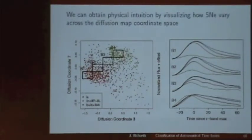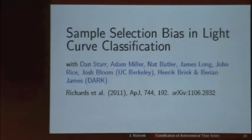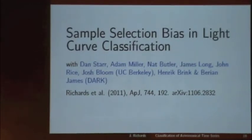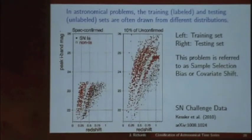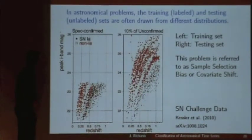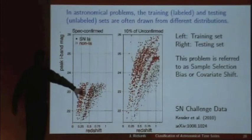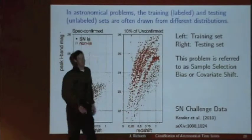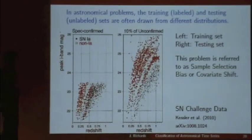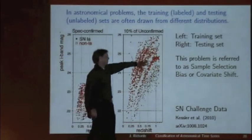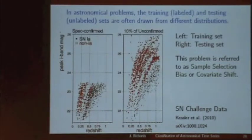I want to talk a little bit about sample selection bias in astronomy — it's come up a couple of times in this conference and it's certainly a big problem in astronomical datasets. Looking at the supernova challenge data, the training set used in the challenge is drawn from a specific distribution of redshift versus brightness. The training set is an extremely biased look at the entire population we want to classify, so there's no reason to believe a classifier trained on it is going to do anything useful in other regimes of the data.